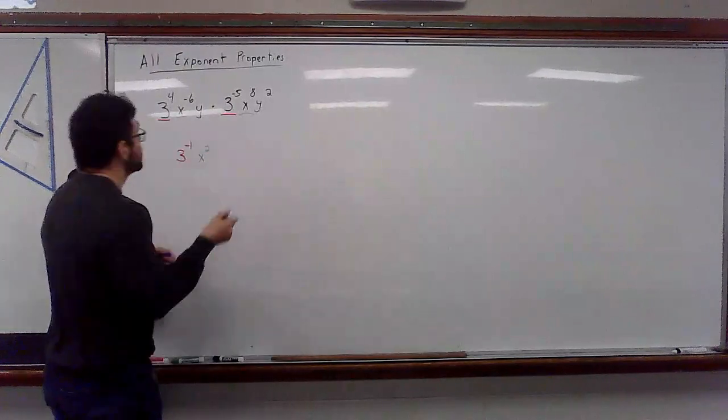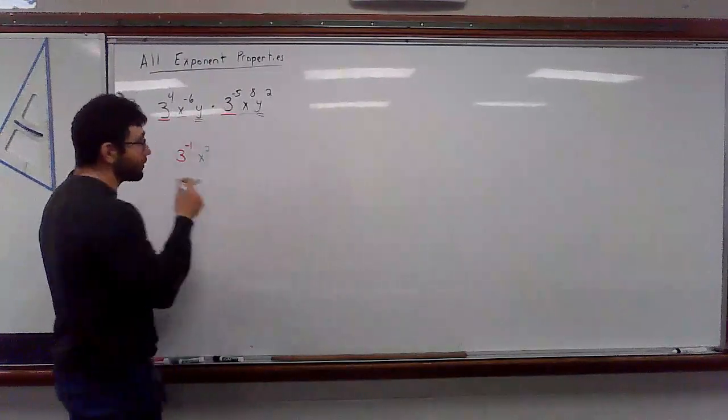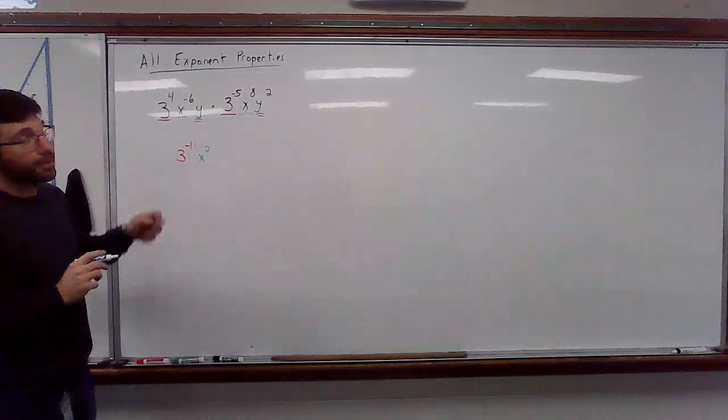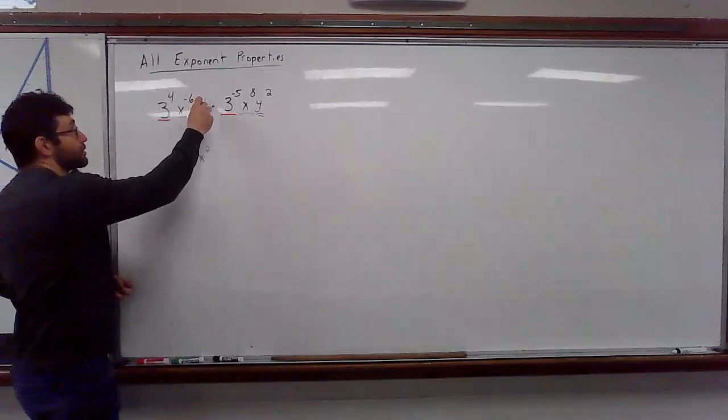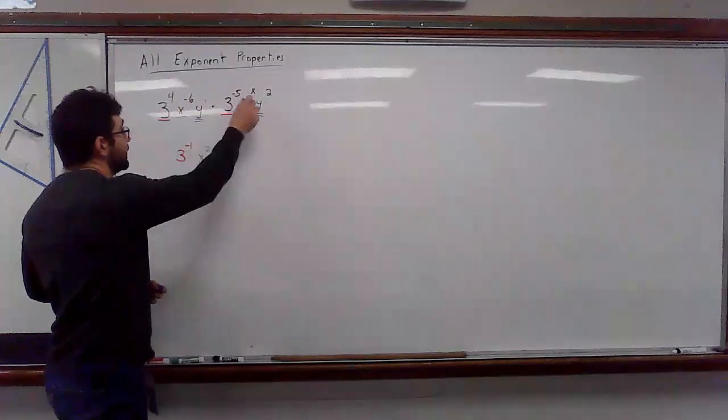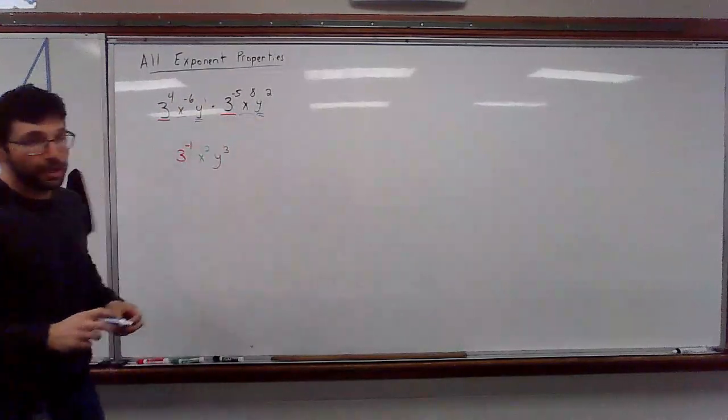X, x, we keep the base, we add the exponents. Negative six plus eight is positive two. Wonderful. Y, y. We have a problem. Everything needs an exponent. Everything has one. This y has a one. We keep the base, we add the exponents. We get y to the third.